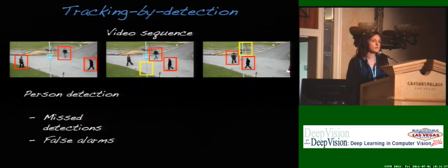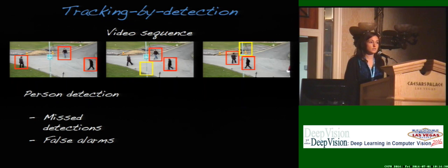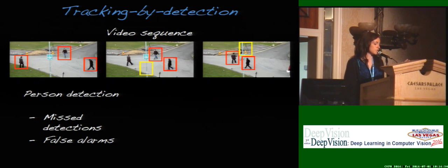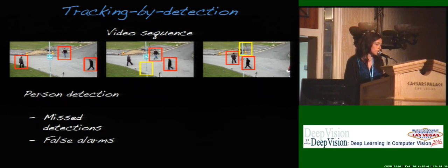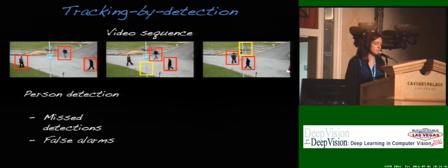The problem we are tackling is multiple object tracking, and we use the framework of tracking by detection, which means that first we want to have a set of detections in each of the frames of the video sequence. But of course these detections are not perfect, so we have some misdetections and some false alarms.